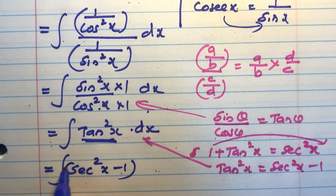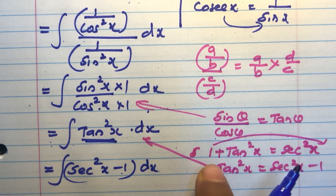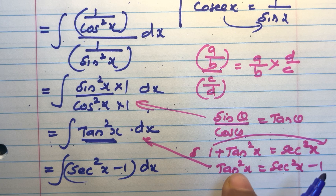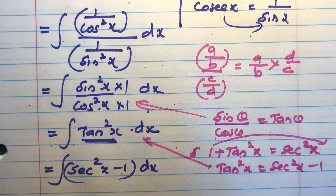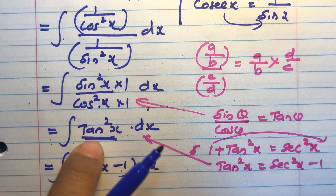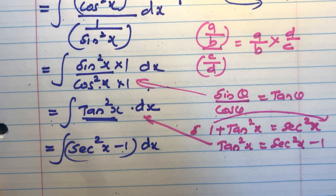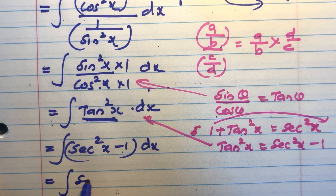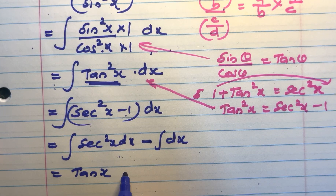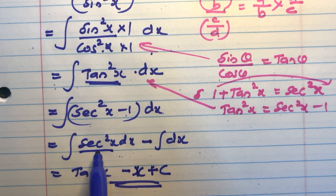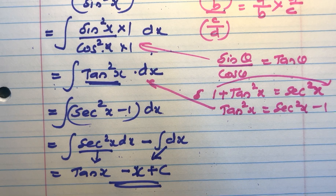Integral of tan squared x has no direct formula, but we can apply the identity 1 plus tan squared x equals sec squared x, therefore tan squared x equals sec squared x minus 1. Substituting, we get integral of (sec squared x minus 1) dx, which equals tanx minus x plus c.